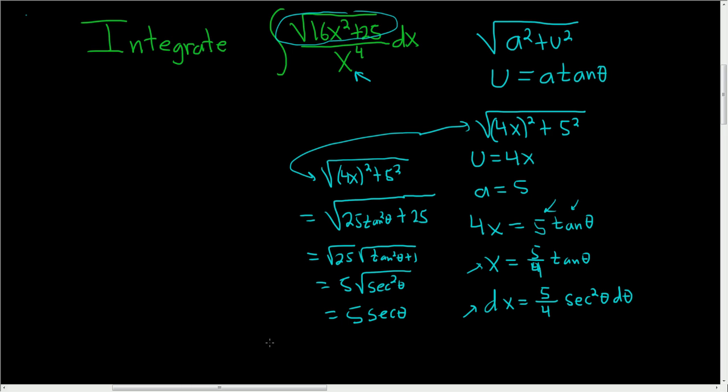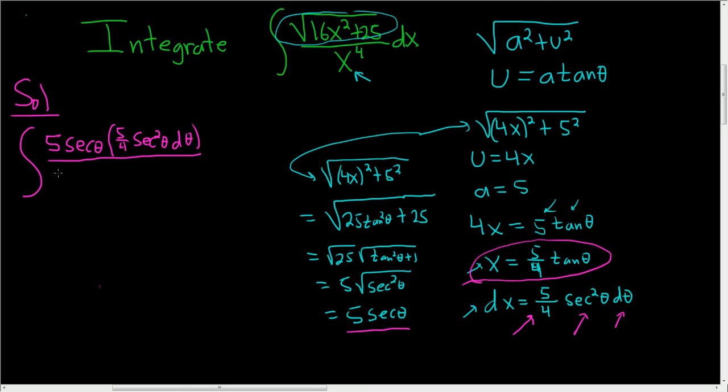Okay, now we are going to write everything in terms of theta. So starting with the numerator, we said that the numerator was 5 secant theta. So we have 5 secant theta. Then we have dx. We said dx was 5 fourths secant squared theta d theta. So parentheses, 5 fourths secant squared theta d theta. In the denominator, we have x, which is right here, and it's being raised to the fourth power. So it's going to be 5 to the fourth over 4 to the fourth. Very messy stuff. And then tangent to the fourth of theta. Yikes.